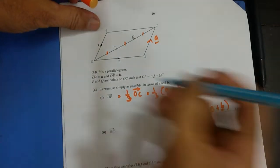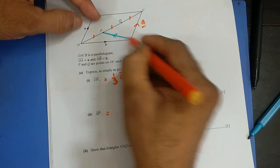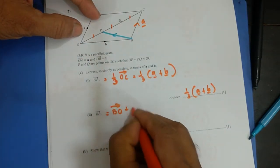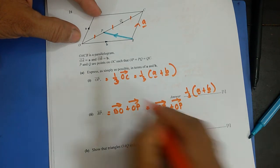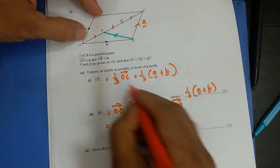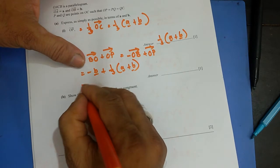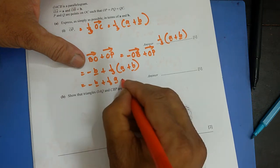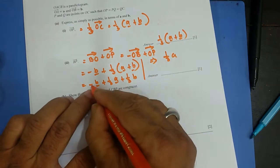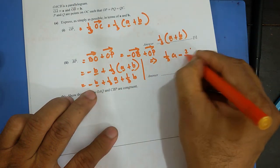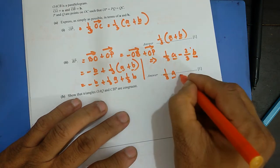BP can be written as 1/3 a minus 2/3 b. That's the simplified vector expression for BP.